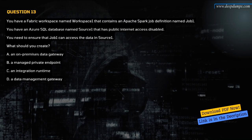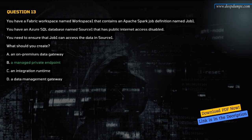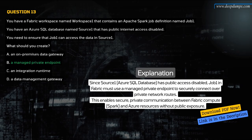Question 13. You have a Fabric workspace named Workspace-1 that contains an Apache Spark job definition named Job-1. You have an Azure SQL database named Source-1 that has public internet access disabled. You need to ensure that Job-1 can access the data in Source-1. What should you create? A. An on-premises data gateway. B. A managed private endpoint. C. An integration runtime. D. A data management gateway. The correct answer is B. A managed private endpoint. Since Source-1 has public access disabled, Job-1 in Fabric must use a managed private endpoint to securely connect over private network routes, enabling private communication between Fabric Spark compute and Azure resources without public exposure.